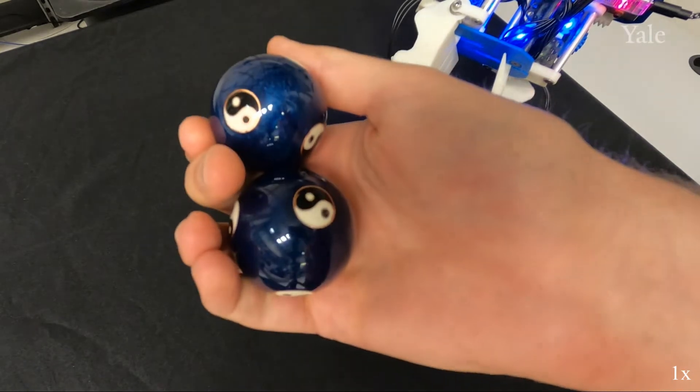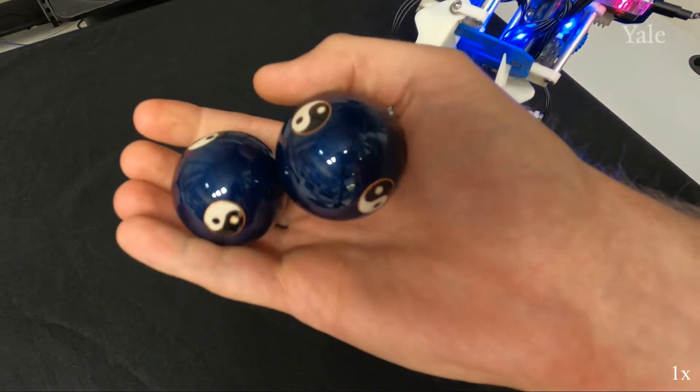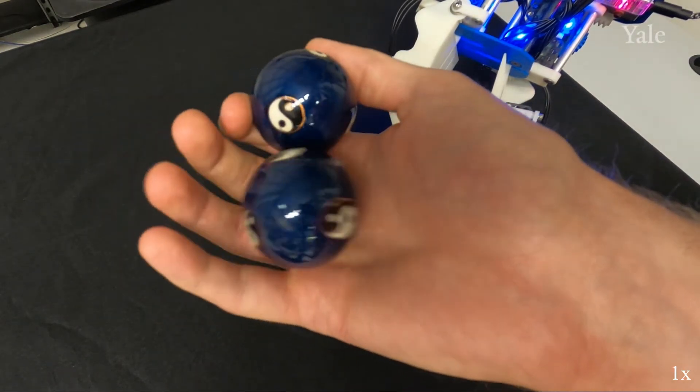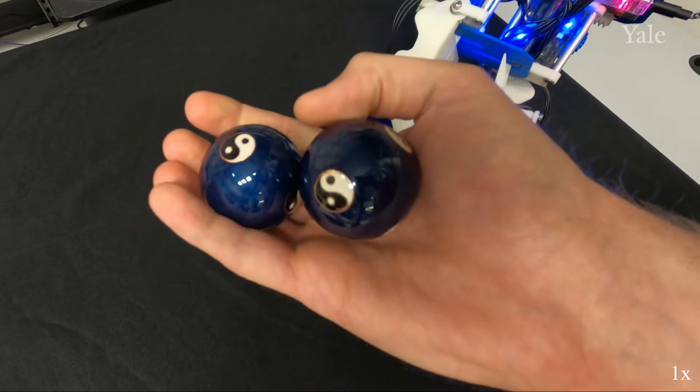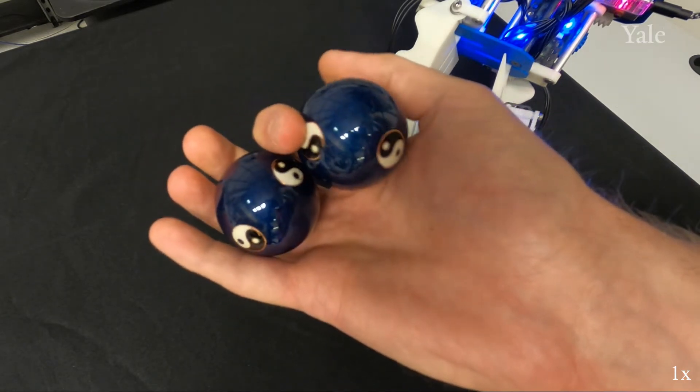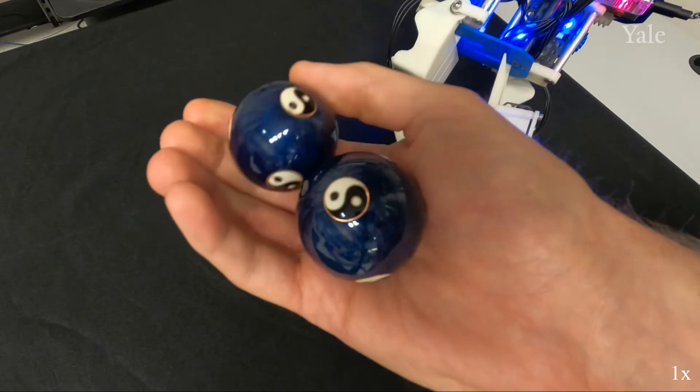The human hand is extremely dexterous, and this capability enables us to manipulate objects with ease. This dexterity is partially due to our ability to seamlessly maneuver our fingers across the surface of an object, making and breaking contacts at will.